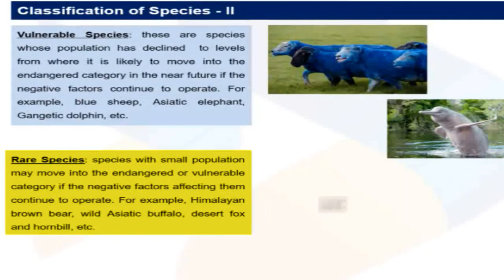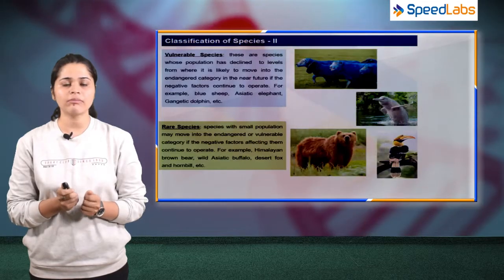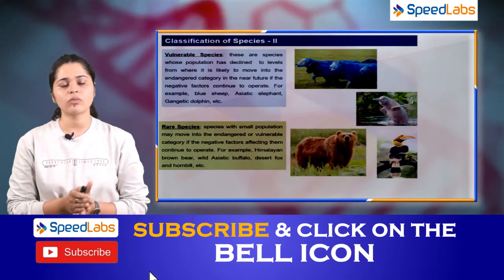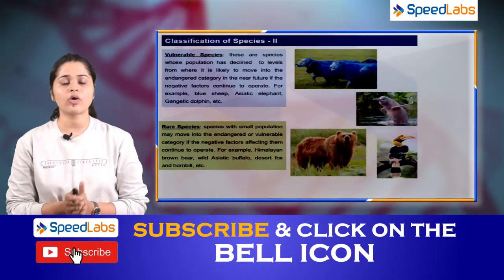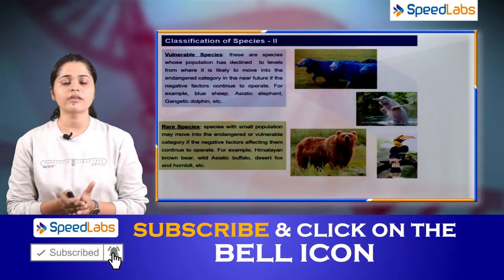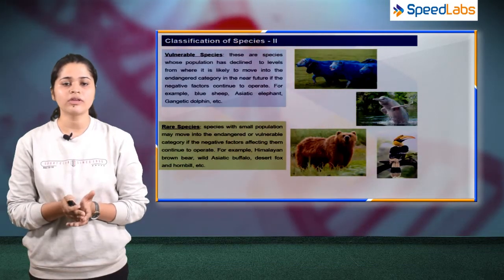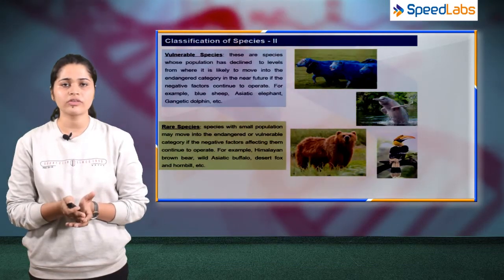The fourth is rare species. These are species with small populations which may move to the endangered or vulnerable category if negative factors continue to operate — they are rarely found. Examples include Asiatic buffaloes, desert fox, and hornbills.